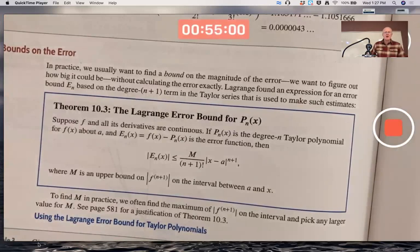Suppose little f and all of its derivatives are continuous. So the first derivative exists and it's continuous, the second derivative exists and it's continuous, etc. It's called an infinitely differentiable function, infinitely even continuously differentiable. It's a nice function like e to the x or cosine of x or sine of x, or natural log of x when x is positive, or 1 over 1 plus x squared, arc tangent of x. Those are all nice functions that have infinitely many derivatives.